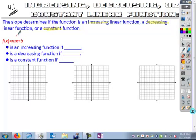Remember the form of a linear equation is f(x) = mx + b, slope-intercept form, where m is your slope and b is your y-intercept.